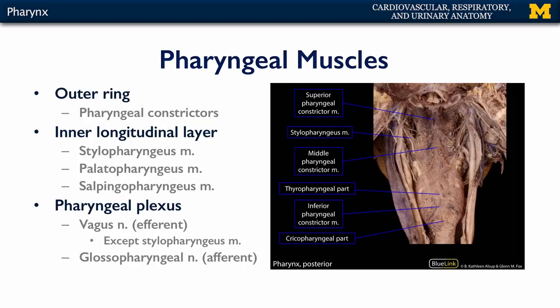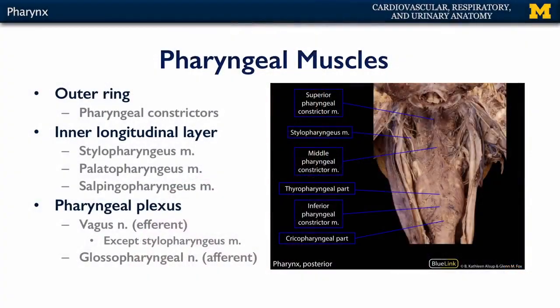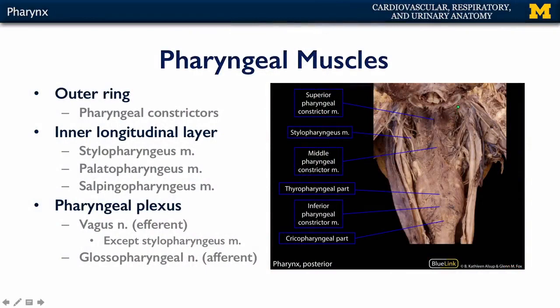The pharynx is comprised of two sets of muscles: an outer layer of circumferential constrictors and an inner longitudinal layer. The outer layer consists of three muscles. The superior pharyngeal constrictor originates on the skull and the buccomandibular raphe, and meets its counterpart along the pharyngeal raphe medially. The middle pharyngeal constrictor originates on the hyoid bone and also meets its counterpart along the pharyngeal raphe. The inferior pharyngeal constrictor originates on the larynx.